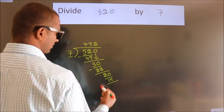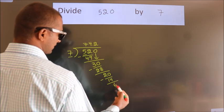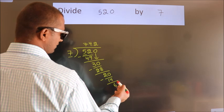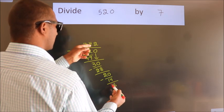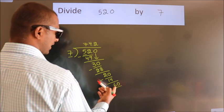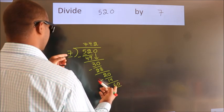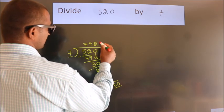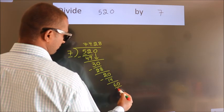Now we subtract. We get 6. After this, we already have the decimal. So directly take 0. So 60. A number close to 60 in 7 table is 7 times 8, 56.